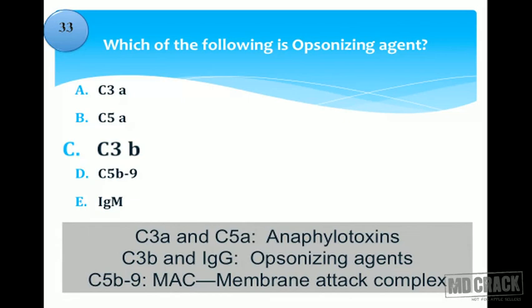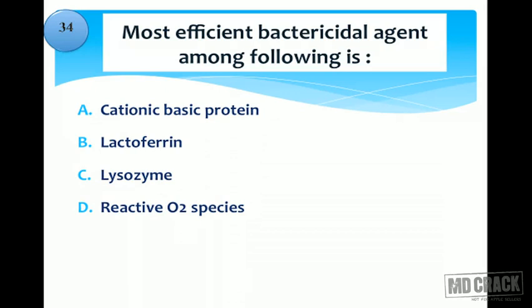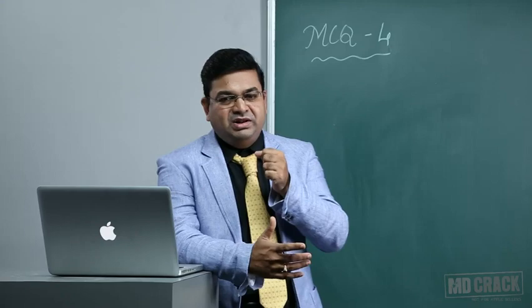To summarize the complement system: C3a and C5a are anaphylatoxins. The two opsonizing agents in our body are C3b and IgG. The membrane attack complex is C5b through C9 — it attacks the membrane and causes infected cells to die, particularly in bacterial infections.